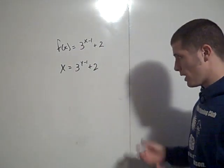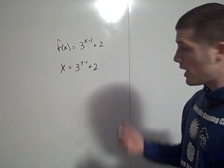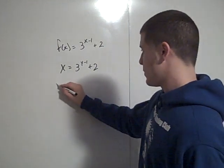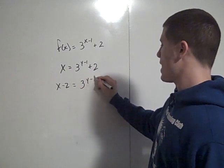We're going to try to get y by itself, so the next step would be to subtract 2 from both sides. If you subtract 2 from both sides, then you have x minus 2 equals 3 to the y minus 1.